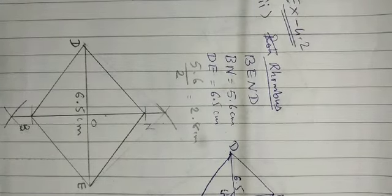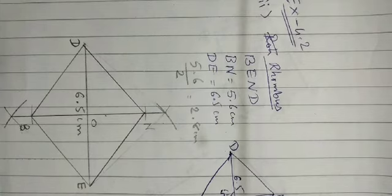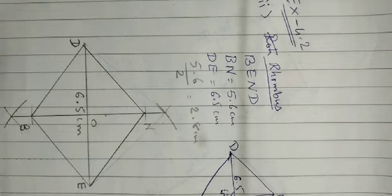Now we will move on to the third type of construction where two adjacent sides and three angles are known. Two adjacent sides and three angles will be given and you have to construct that quadrilateral.